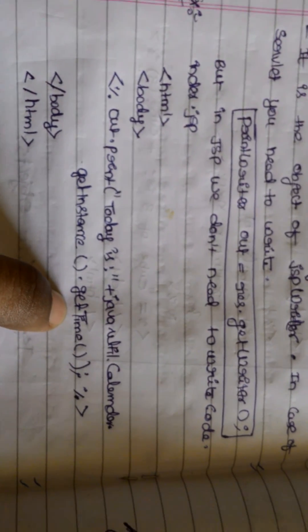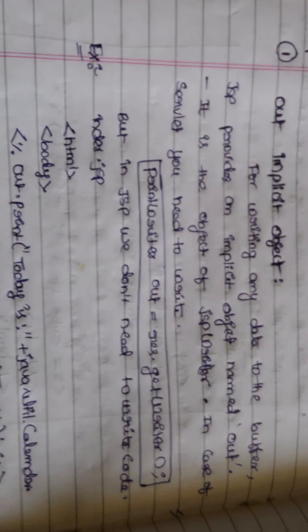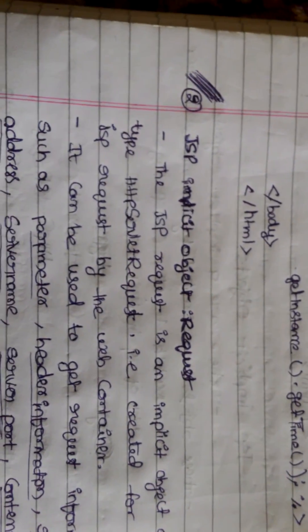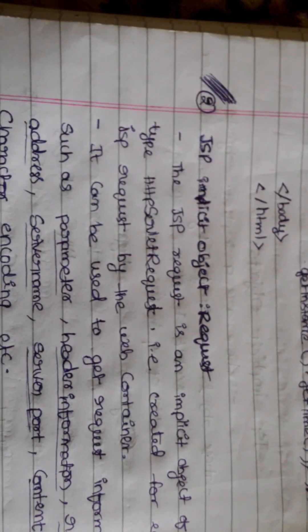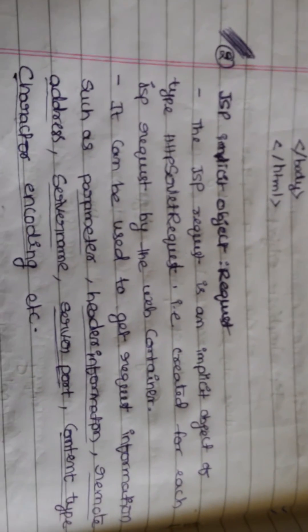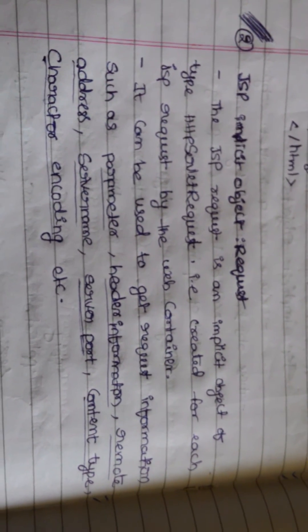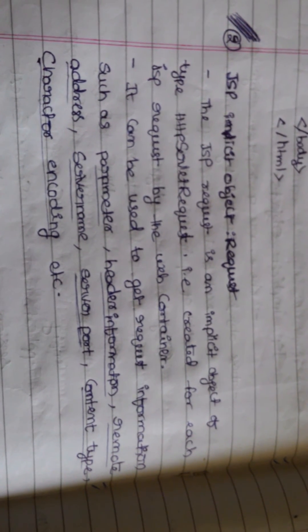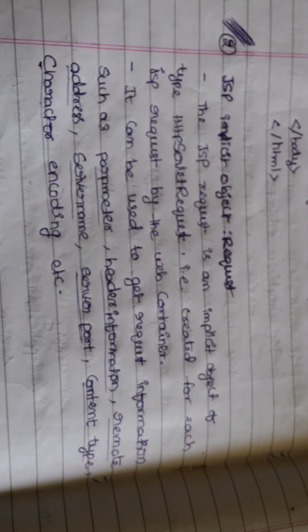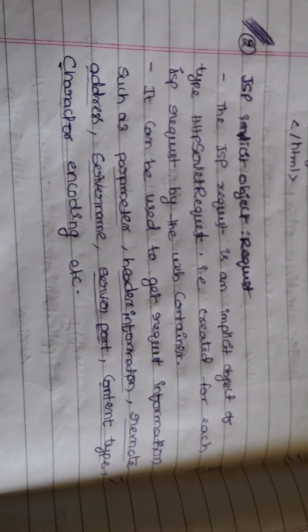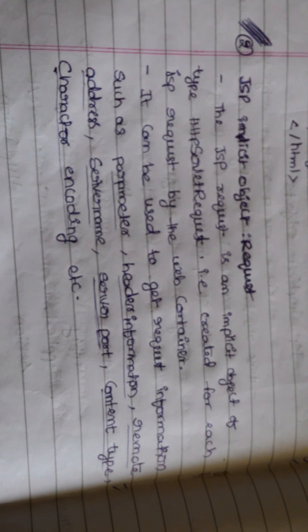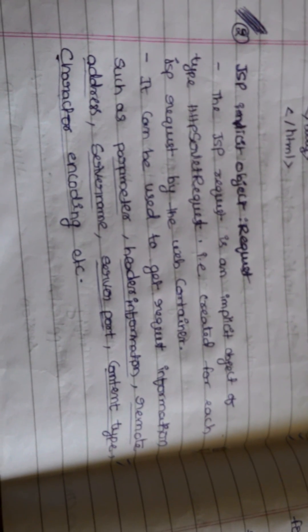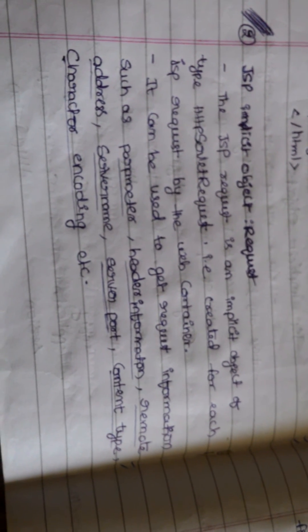Next implicit object is request. JSP request is an implicit object of type HttpServletRequest. It is created for each JSP request by the web container. The request object is created by the web container for each request.